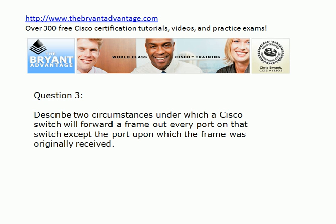Two circumstances: first, if it's a broadcast frame to begin with — and the broadcast address for frames is the all-F's MAC address. Also, if the frame is what we call an unknown unicast, it's going to be sent out every other port on the switch. What we mean is the frame has a unicast destination address, but the switch has not learned where that address is yet. So if it's a broadcast or an unknown unicast, the frame is sent out every other port on the switch except the one it came in on.